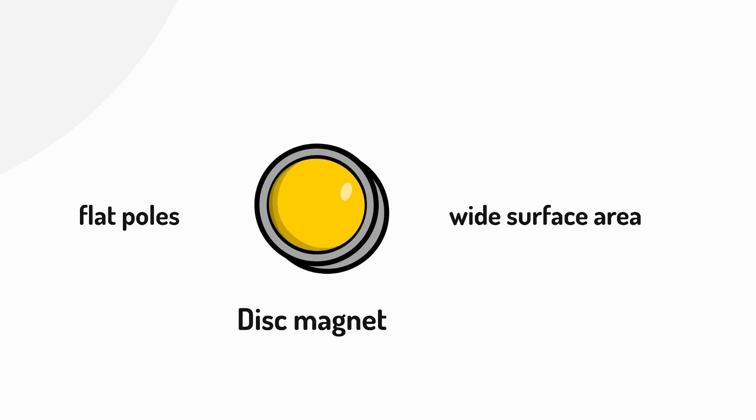Ball magnets have very small poles, so they aren't great for lifting, but they can be very strong for their size. This is because they're often made from highly magnetic materials like neodymium, which has a very strong magnetic field.